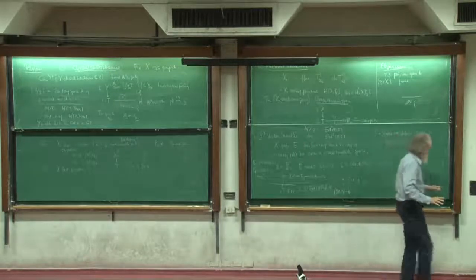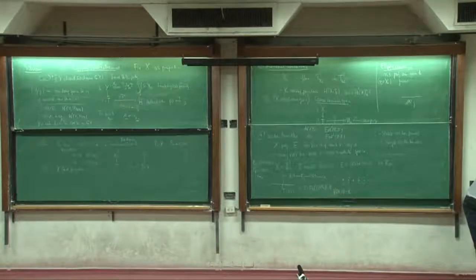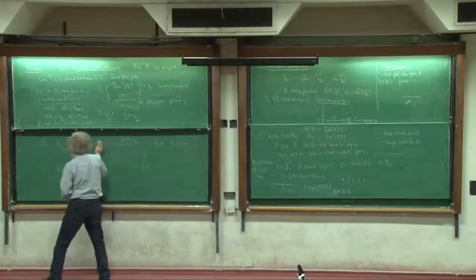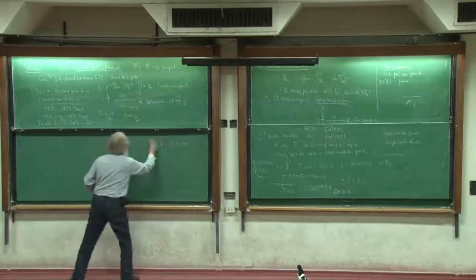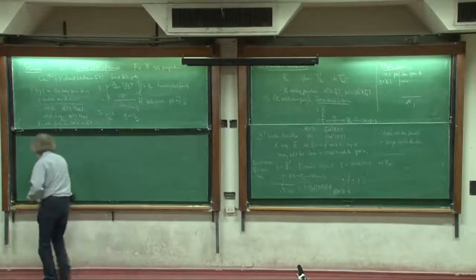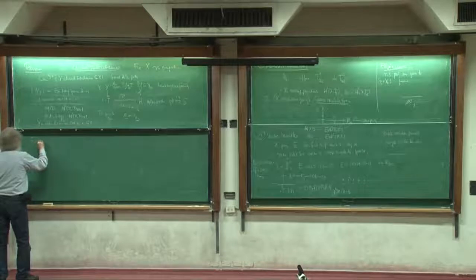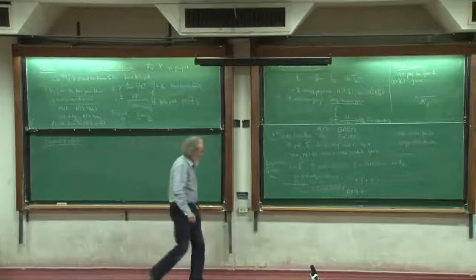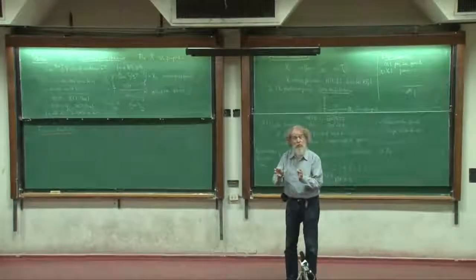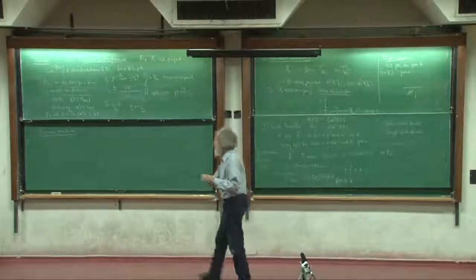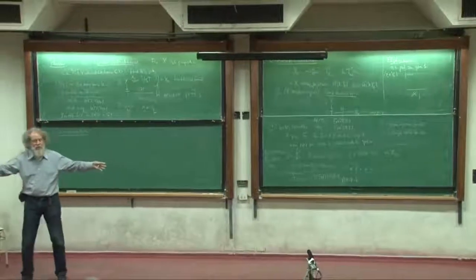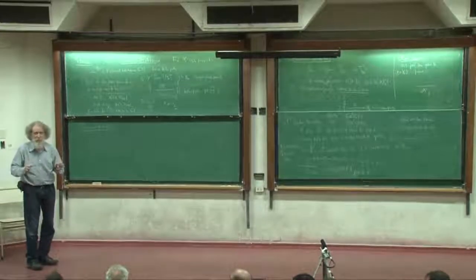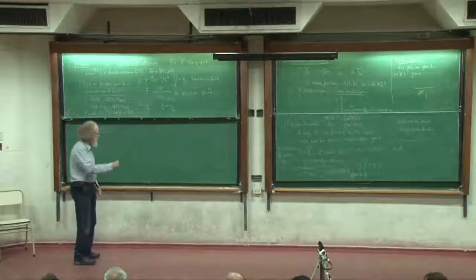That closes the review, and brings me to the next topic for the day: formal moduli. Up to now we've studied deformations over the dual numbers or over Artinian rings — infinitesimal, very local. And just now I've given a review of the global question of moduli, which is very uneven and unsatisfactory. Formal moduli is a question that lies in between those two — between the particularly local and the global.